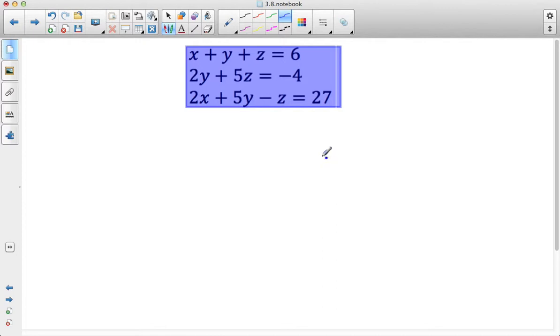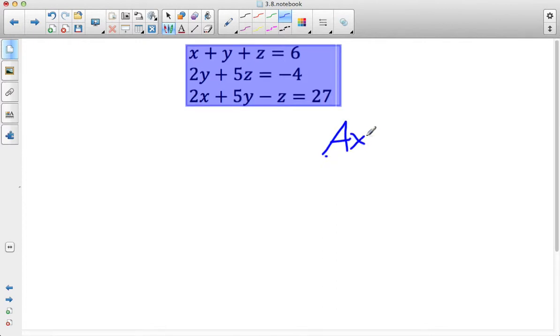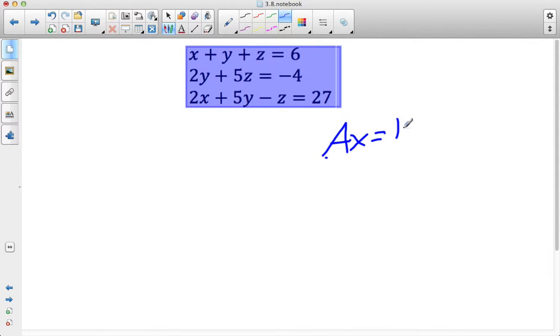I know that my equation for this is going to be AX = B, so now I just have to define what these are. A is going to be my coefficient matrix, so I have to look at my system and look at my coefficients.